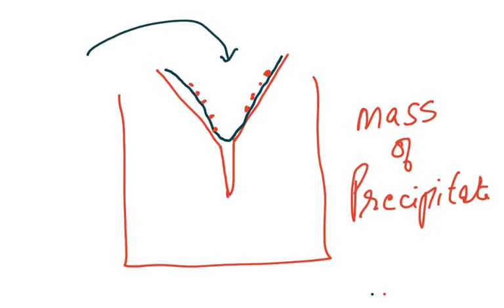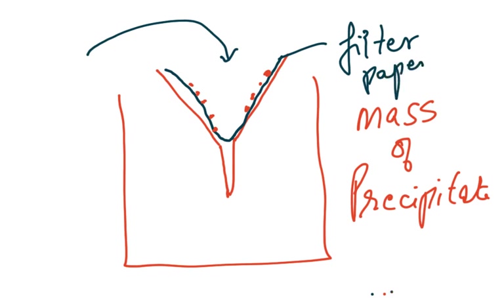Scrape the precipitate off the filter paper and place it on a digital weighing balance to measure its mass. The more sucrose present, the greater the mass of the precipitate after hydrolysis and reaction with Benedict's solution. By comparing the mass of precipitate from each sample, you can determine which has 1% sucrose and which has 5% sucrose.